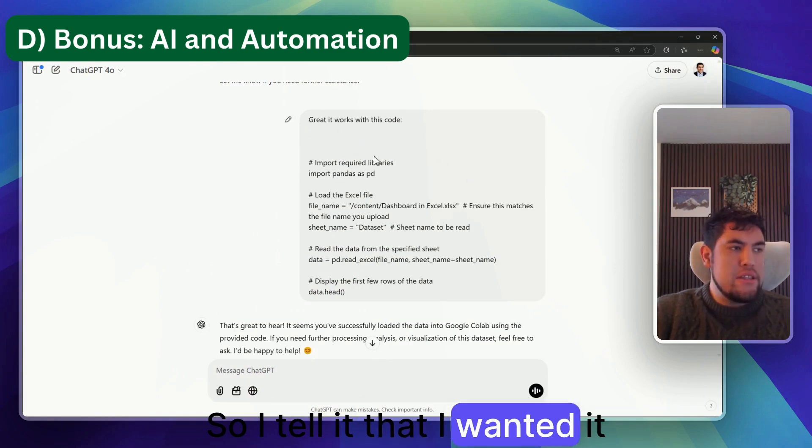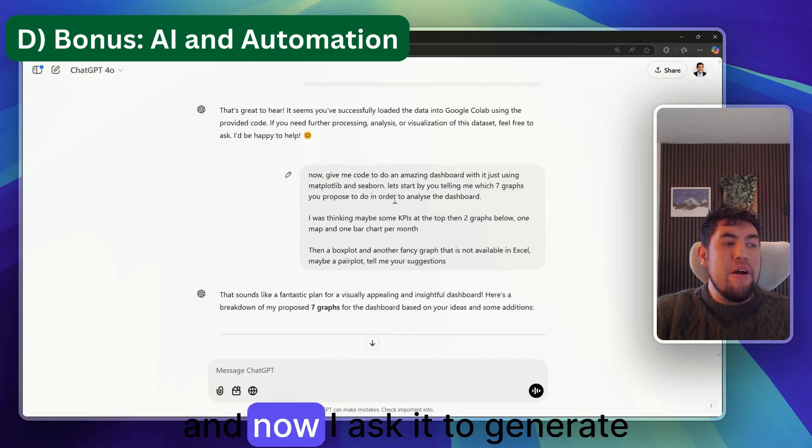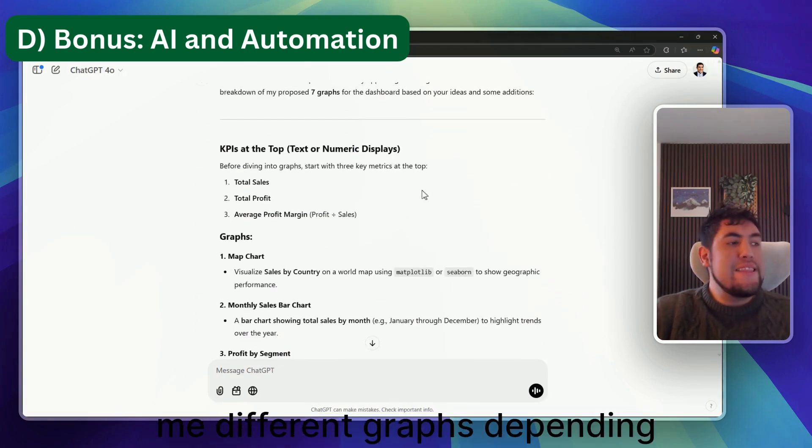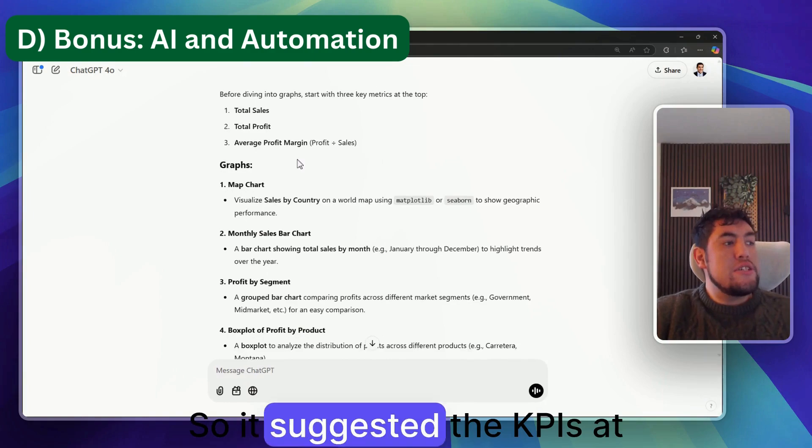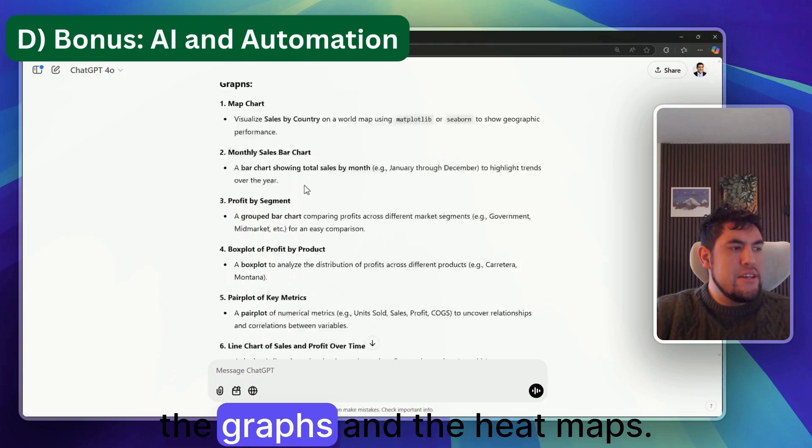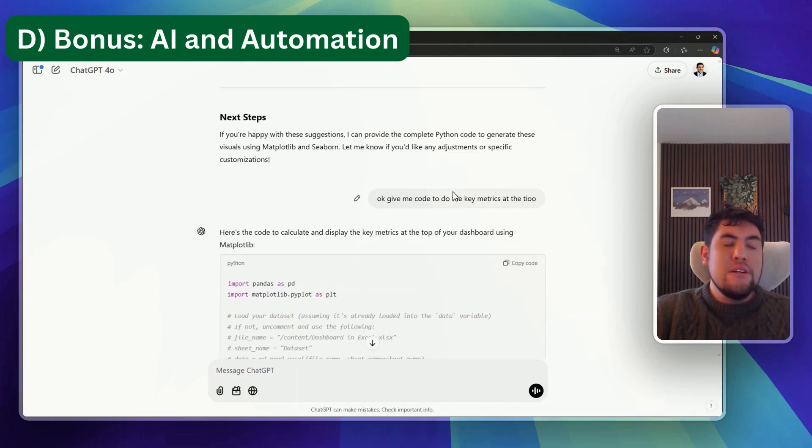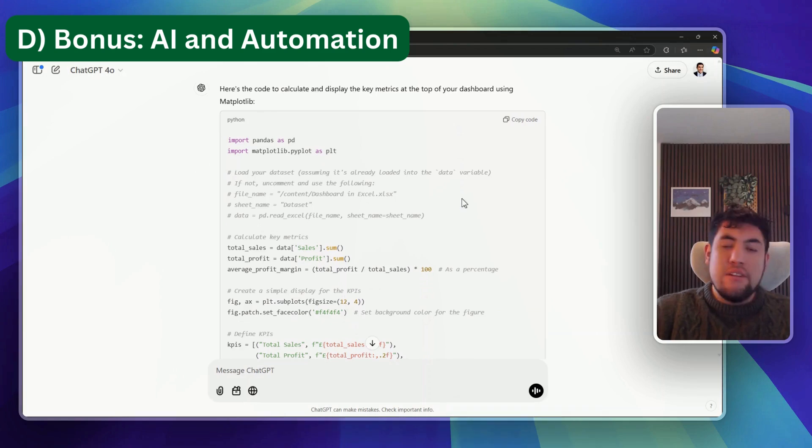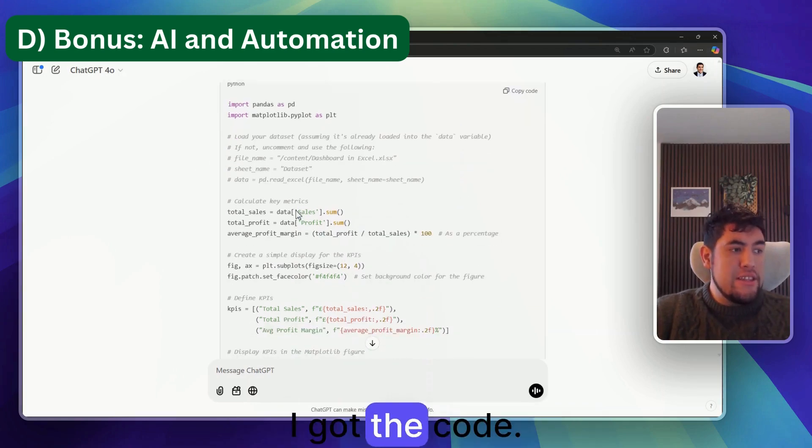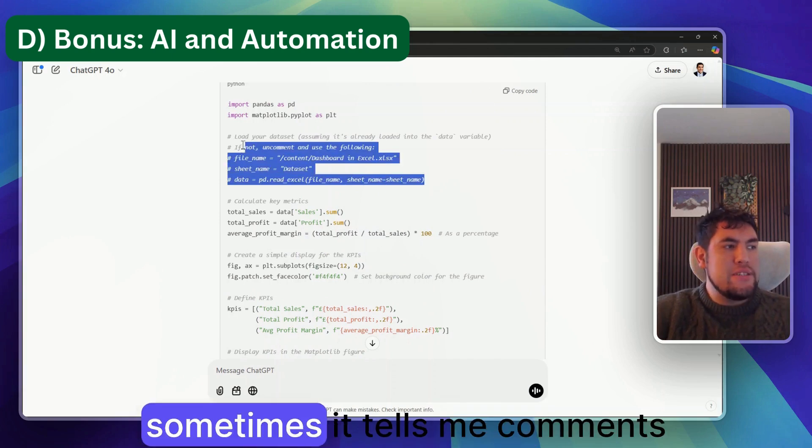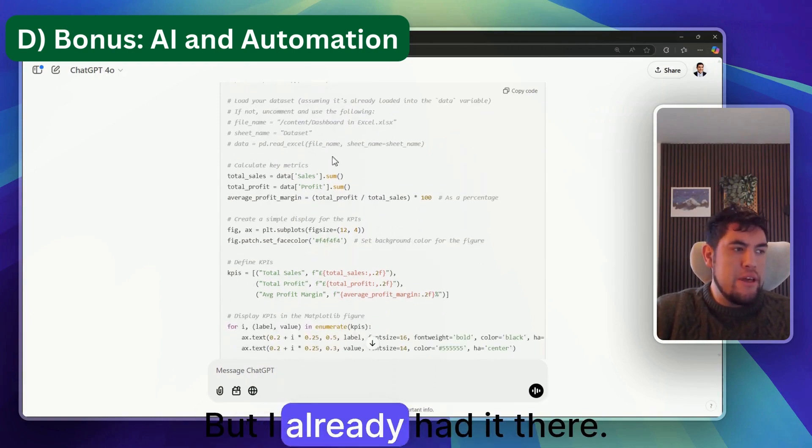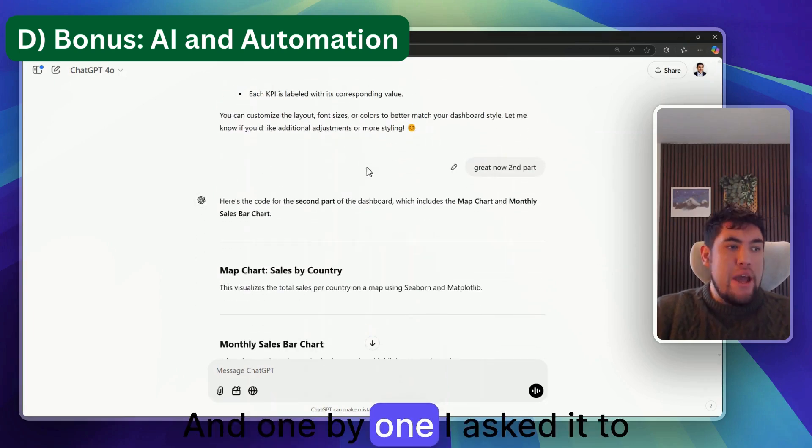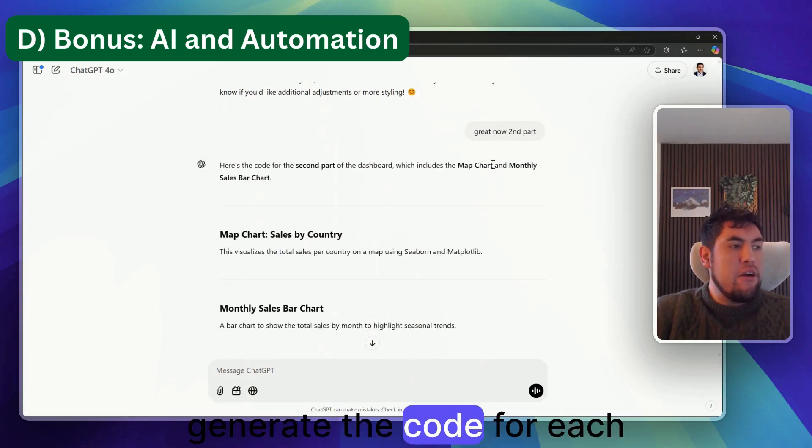I asked it to generate me different graphs depending on the data that I had. So it suggested the KPIs at the top, the graphs, and the heat maps. I told it to give me the code to do first the metrics. Just like that I got the code. Here again, sometimes it tells me comments like 'load your data set' even if it's already up there, but I already had it there.